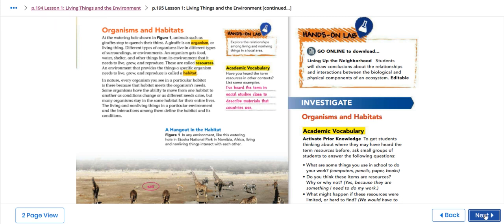Moving to the first part of the lesson, which talks about organisms and habitats. For example, a giraffe is an organism or living thing. Different types of organisms live in different types of surroundings or environments. An organism gets food, water, shelter, and other things from its environment that it needs to live, grow, and reproduce. These are all called resources. An environment that provides the things a specific organism needs to live, grow, and reproduce is called a habitat.